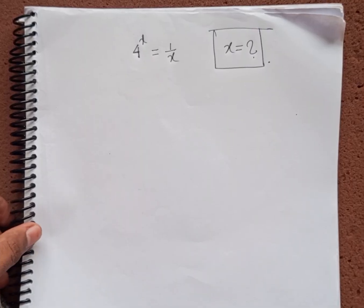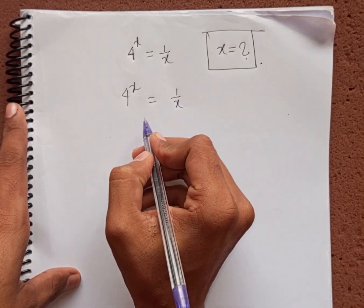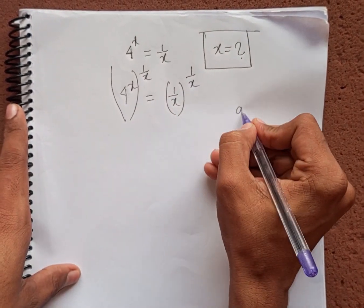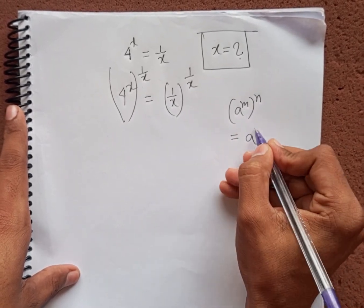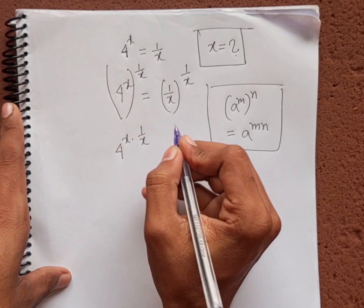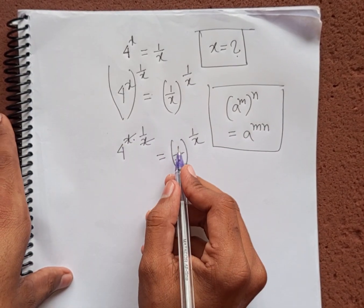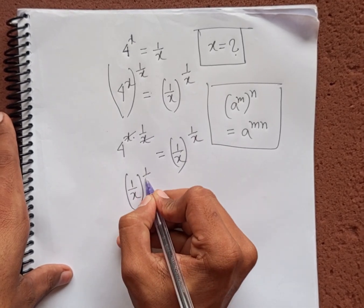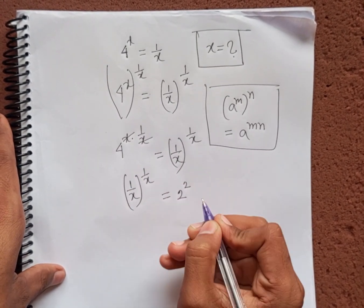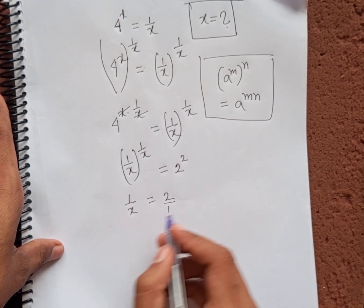Now, how to solve 4 power x equals 1 by x — find the value of x. We have 4 power x equals 1 by x. Now we multiply both sides by the power of 1 by x. Applying the formula a power m bracket power n equals a power mn, it will be 4 power of x times 1 by x on the left, and 1 by x bracket power 1 by x on the right. The x terms cancel, giving 1 by x bracket power 1 by x equals 4 power 1, which is 4, written as 2 power 2.